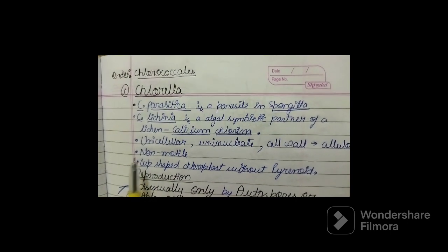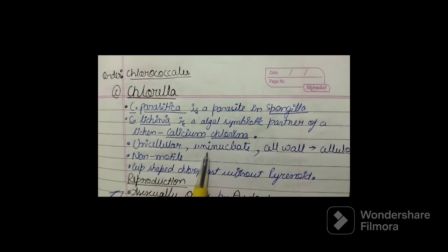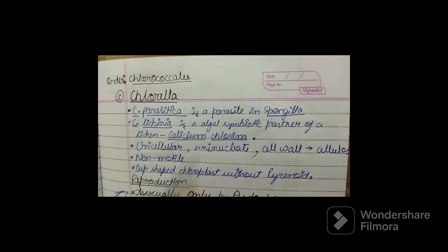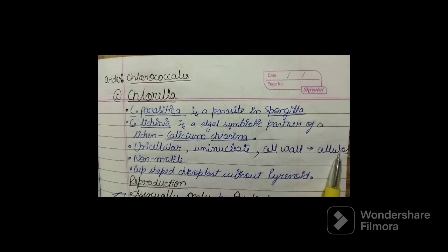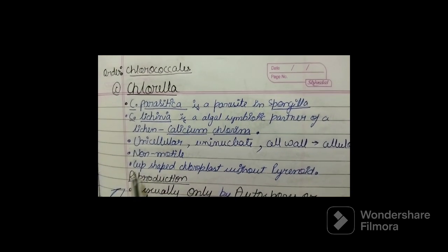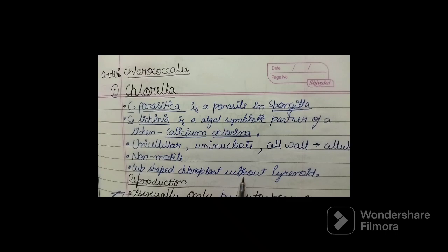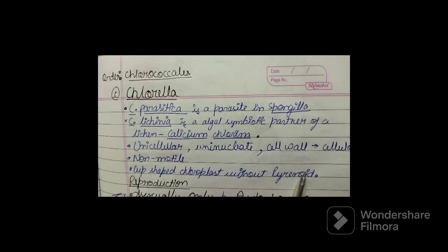Chlorella is basically a unicellular, uninucleate, non-motile algae. Its cell wall is made up of cellulose and it consists of a cup-shaped chloroplast without pyrenoid.